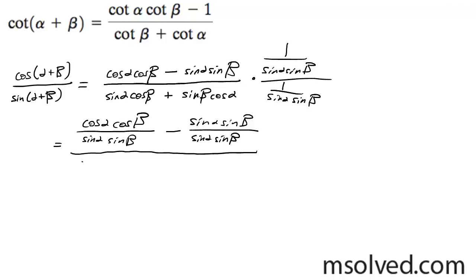And on my denominator, I'm going to have sine alpha, cosine beta over sine alpha, sine beta.